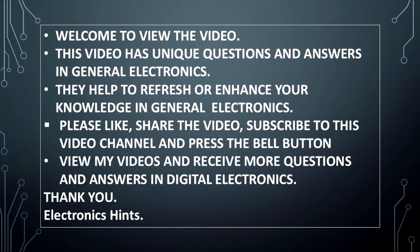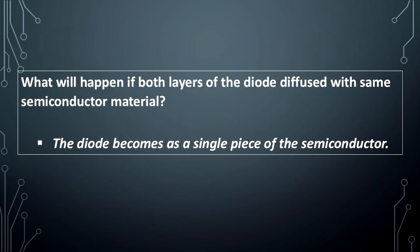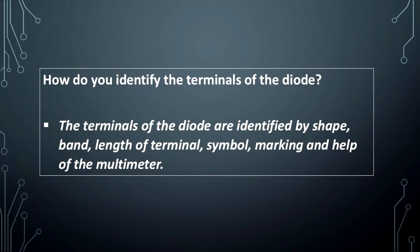View my videos and receive new questions and answers in Digital Electronics. Thank you. What will happen if both layers of the diode are diffused with the same semiconductor material? The diode becomes as a single piece of the semiconductor.